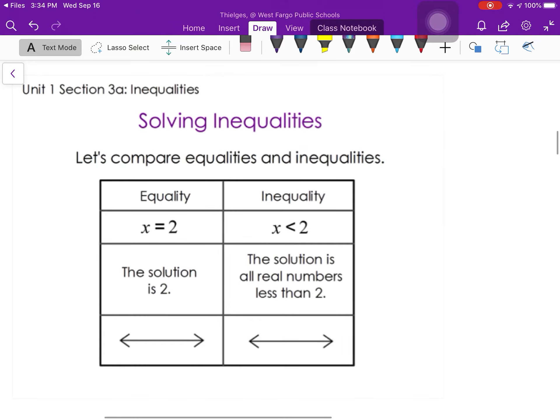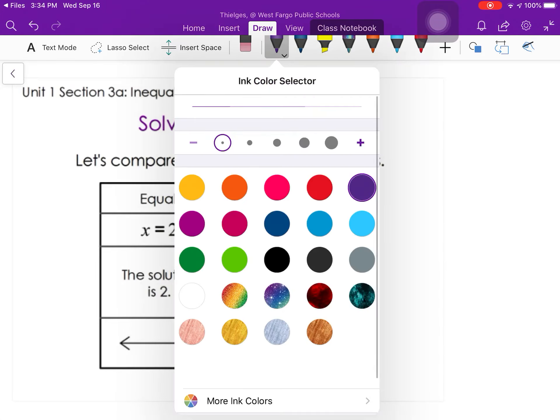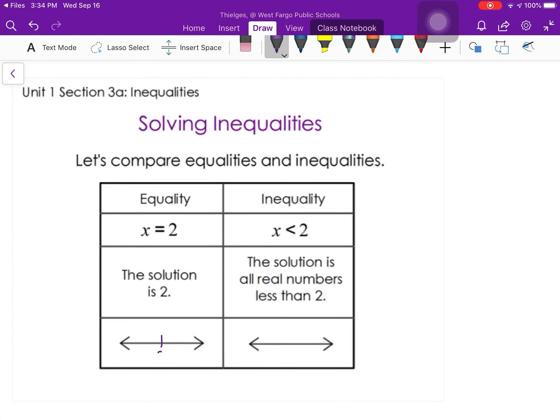So to recap the graphing, you would have your... that's equals to, and this is everything less than 2 because on the number line there's 1, there's 0, there's negative 1 and everything to the left would be less than.